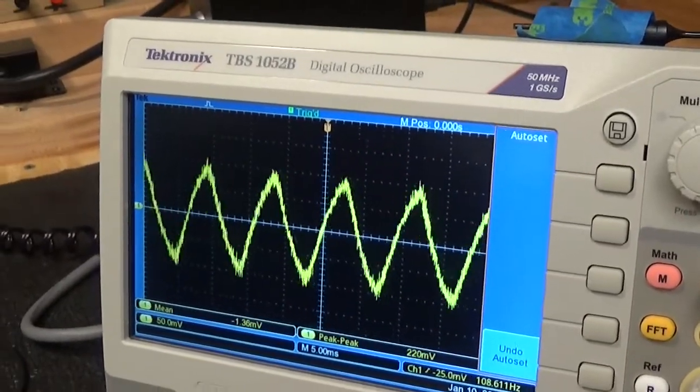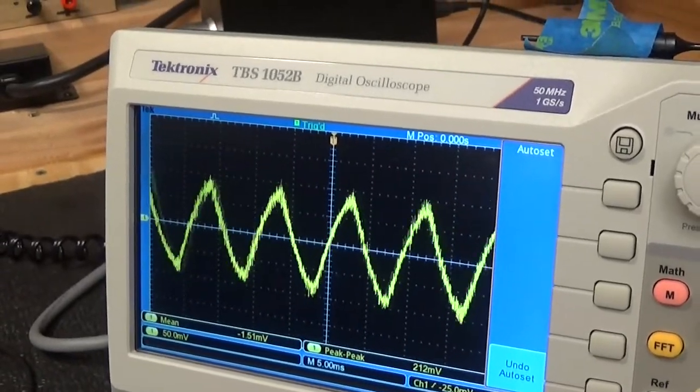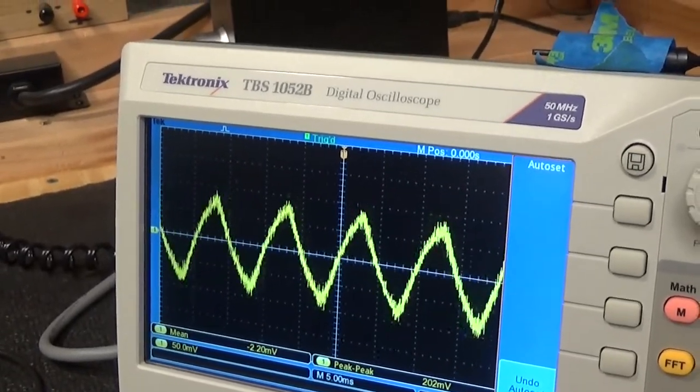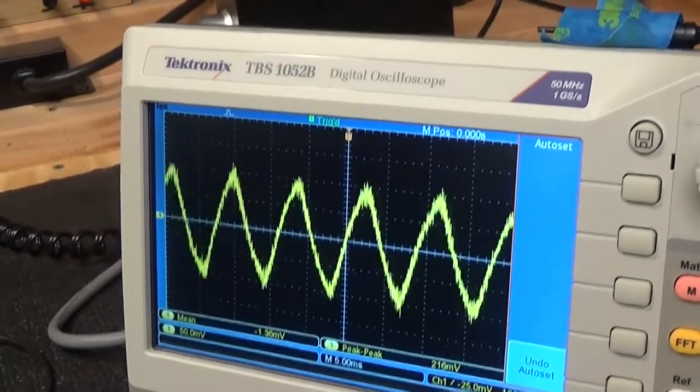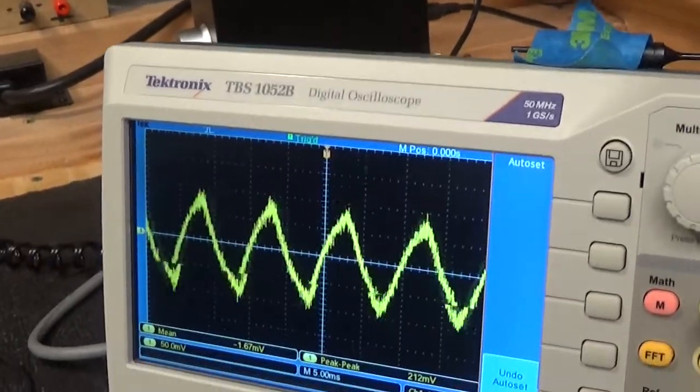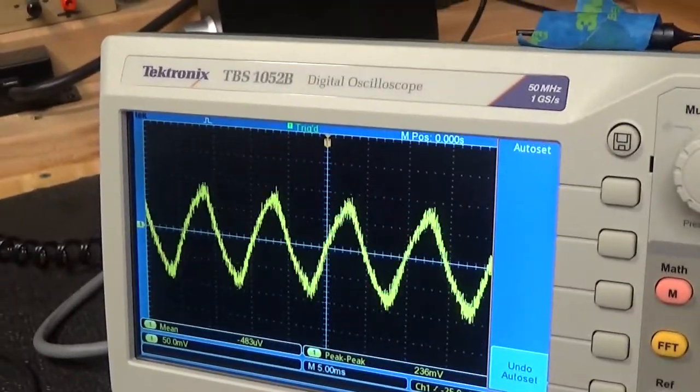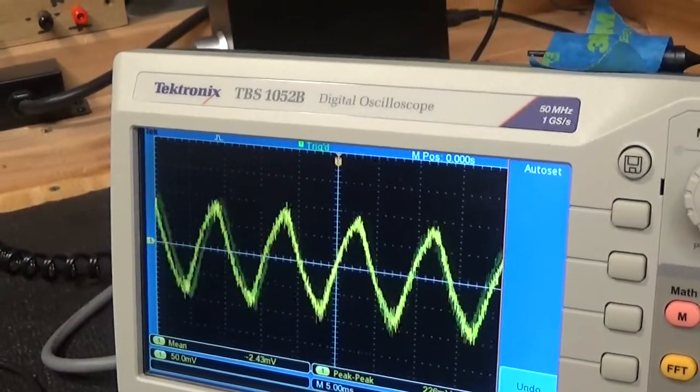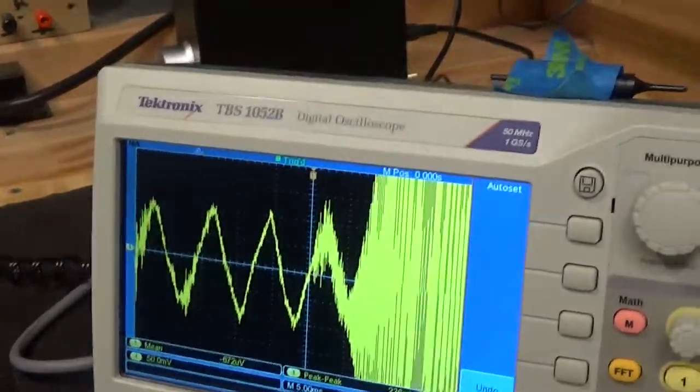Now maybe that's a function of this particular cassette deck. Maybe with metal tape, which I'm using standard tape, but maybe with metal tape or CRO2, in a better deck from the old days, one of the top-notch ones. Maybe you could get some 15K on there.